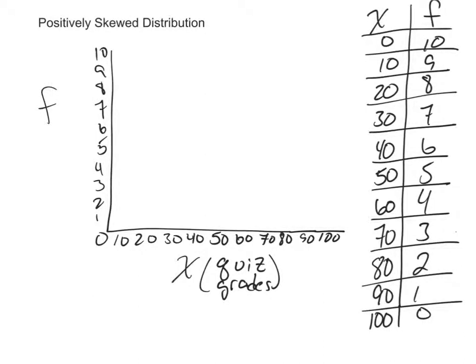In this video, we're going to talk about positively skewed distributions. Over here on the right, we have our raw scores, our X's. People scoring in our variable here is quiz grades. We're looking at how well did this class do on the last quiz.